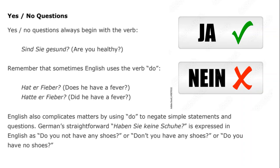Now we have to talk about yes-no questions within German. Yes-no questions always begin with the verb. So 'sind Sie gesund?' — the verb 'sind' is right there at the beginning, just as it would be in English: 'you are healthy' is a statement, 'are you healthy' is a question. Remember that English sometimes uses the verb 'do' in a way that will not be translated correspondingly into German. In English we would say 'does he have a fever?' but in German it's simply 'Hat er Fieber?' English also complicates matters by using 'do' to negate simple statements and questions — 'don't you have any shoes?' — but in German it's actually much more straightforward: 'Haben Sie keine Schuhe?'